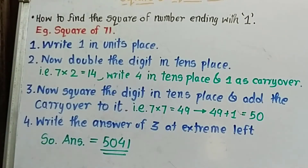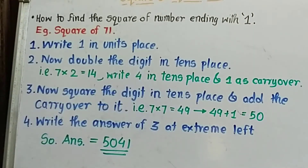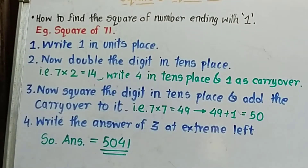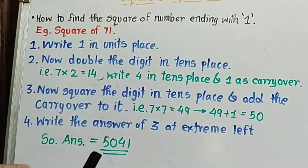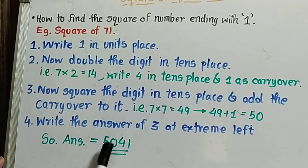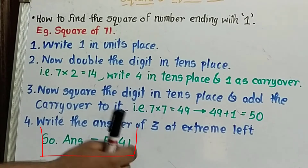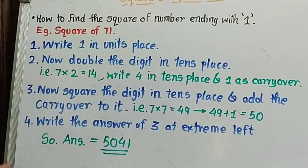Now square the digit in the 10th place: 7 into 7 is 49. Add the carryover: 49 plus 1 equals 50. Write 50 at the extreme left. So the 10th digit is 4 and the unit digit is 1, giving us the answer 5041, which is the square of 71.